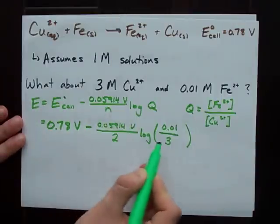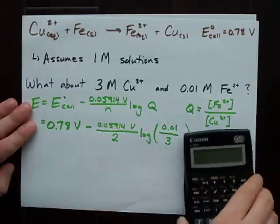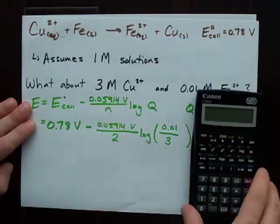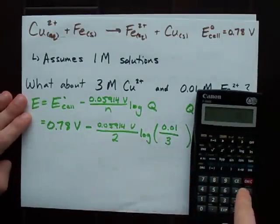So I've filled in all the numbers that I need right here, and now all we need is a little calculator to figure out what this value is. I'm going to start over here, 0.01 divided by 3.